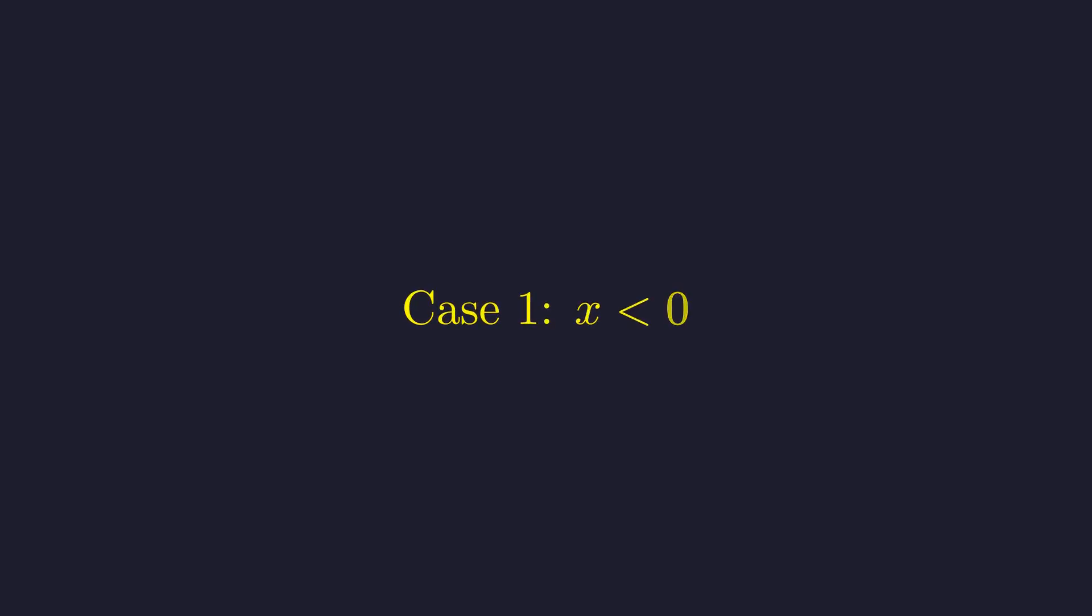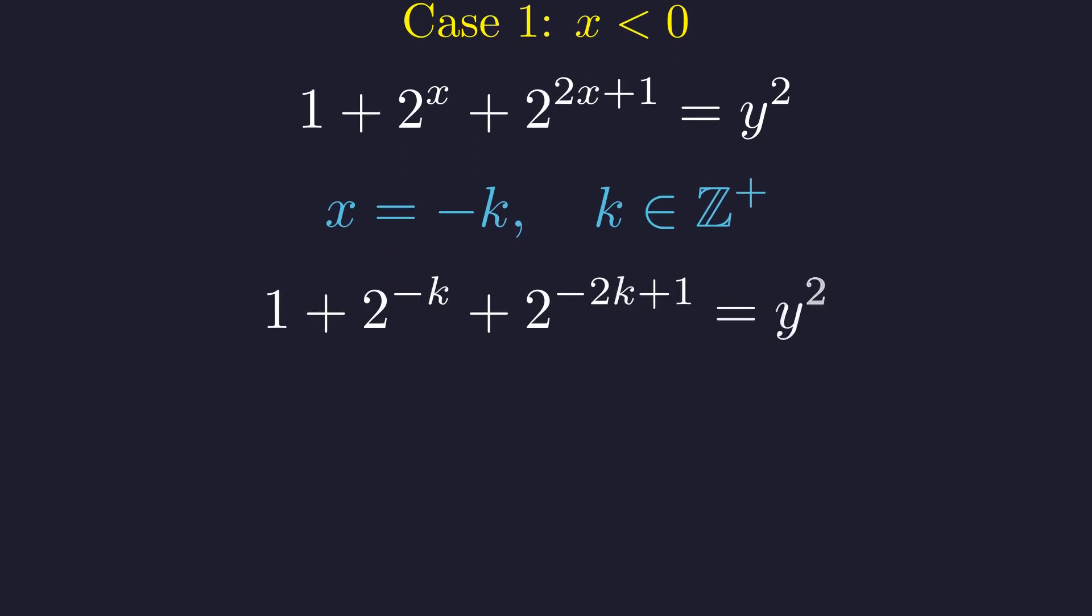First, let's explore what happens when x is a negative integer. Since x is negative, let's substitute x with negative k, where k is a positive integer. This substitution will turn our negative exponents into positive ones, making them much easier to handle. Plugging this in gives us an equation with fractions.